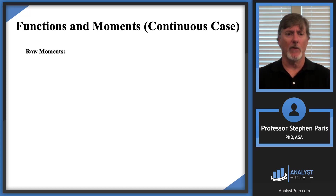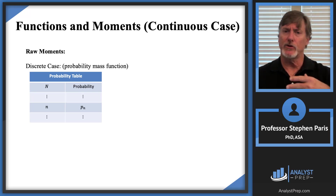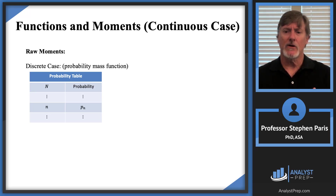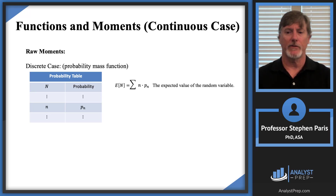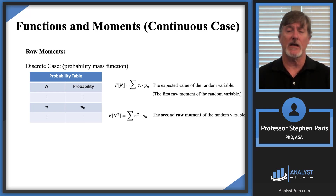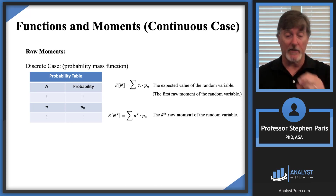That does it for functions. Now let's talk about moments. In the discrete case, we had a probability mass function, and with a discrete random variable you list out the values. When talking about moments or expected values, the expected value was a sum-product: you take the product of each value in the support times its corresponding point mass, then add them all up. That was the first moment of the random variable. For the second moment you take the square of the random variable times its associated probability and add them up. Generalizing to the kth moment, you raise the values to the kth power.